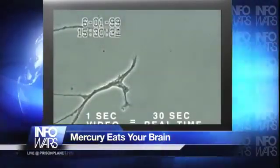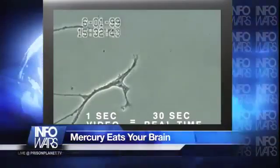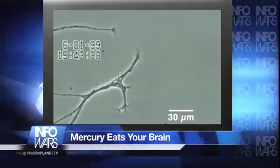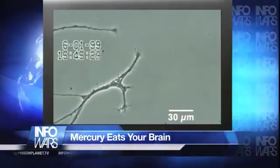In this experiment, neurons also isolated from snail brain tissue were grown in culture for several days, after which very low concentrations of mercury were added to the culture medium for 20 minutes.